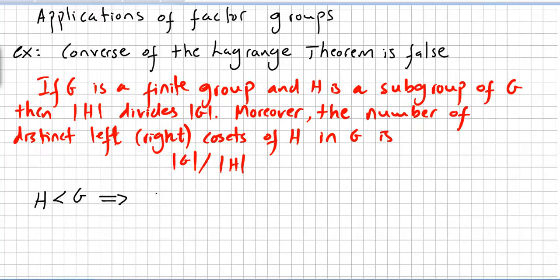If H is a subgroup of G, the order of H will divide the order of G. Moreover, the number of distinct left and right cosets of H in G is the division.